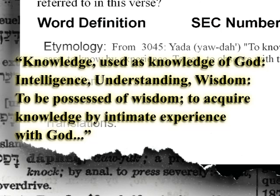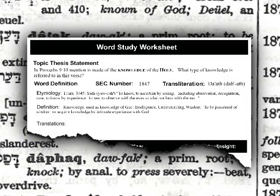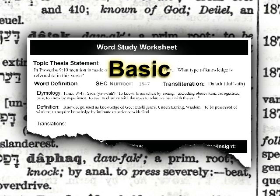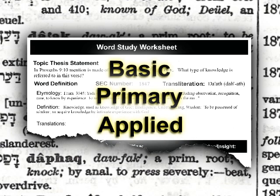You might record a definition similar to this example for Da'ath: knowledge — used as knowledge of God, intelligence, understanding, wisdom, to be possessed of wisdom, to acquire knowledge by intimate experience with God. When compiling Hebrew or Greek definitions, there are three degrees of expanded applications. These degrees are basic, primary, and applied definitions. By using the sample definition of Da'ath, let's define the three degrees of expanded definitions.